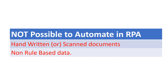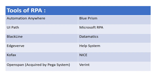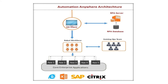Here I have mentioned a few tools used in the IT industry, such as Automation Anywhere, Blue Prism, UiPath, Microsoft RPA, HelpSystems, NICE, OpenSpan, and others. Now we are going to talk about the Automation Anywhere architecture.